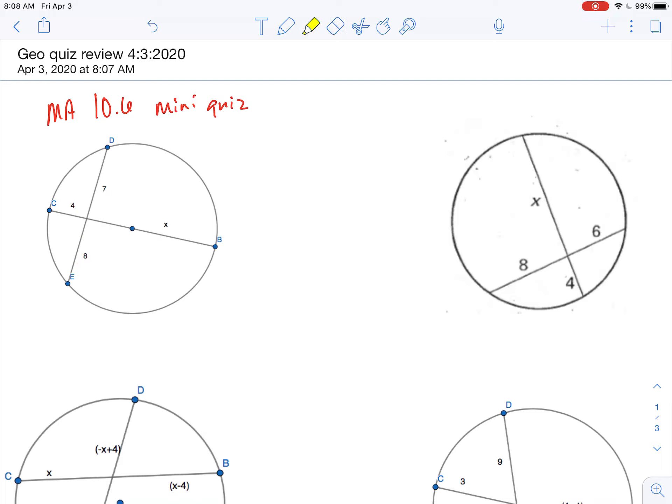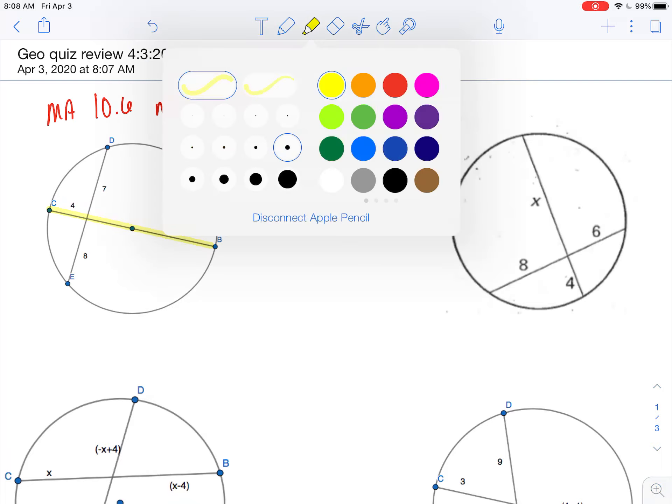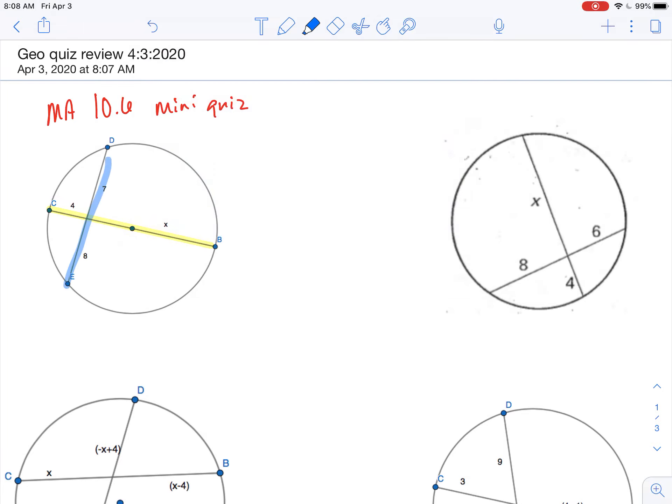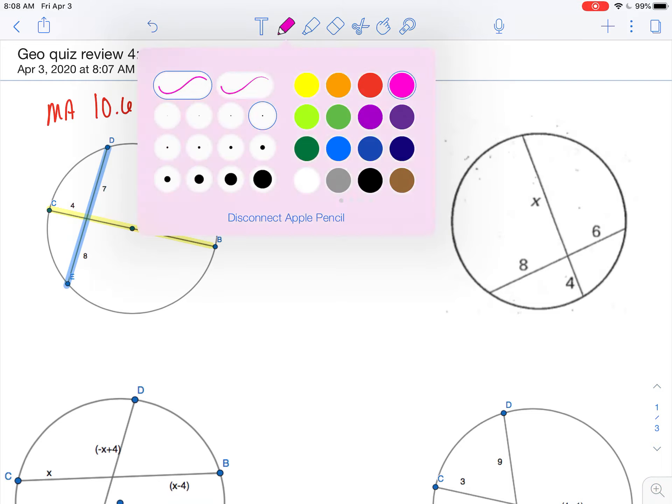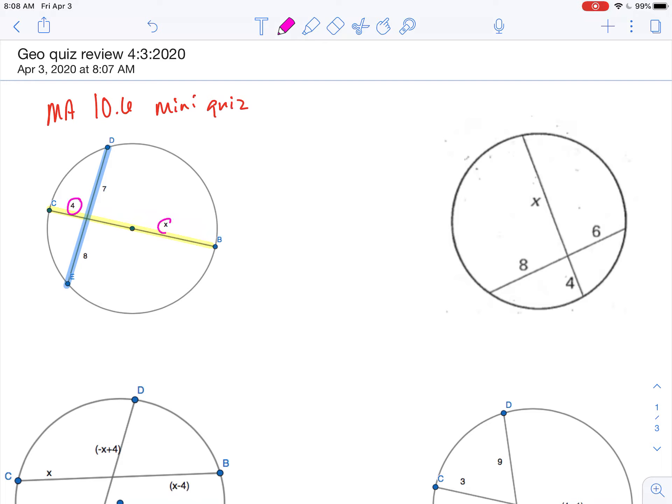All right, now we've got two parts of a chord and we have two parts of another chord. What we end up doing here is we're just going to look at each chord. We're not going to mix lengths from different chords. We're just going to take one part of a chord times the other part of the same chord. So 4 times x, and we can set that equal to the product of the parts of the other chord, so 8 times 7.